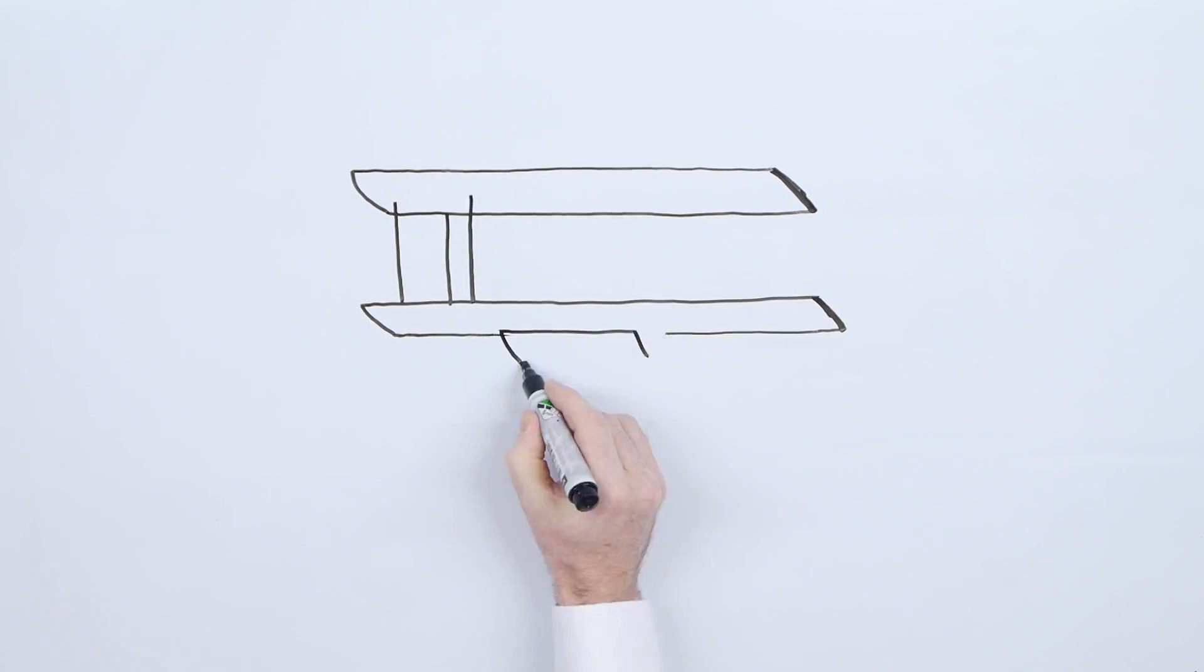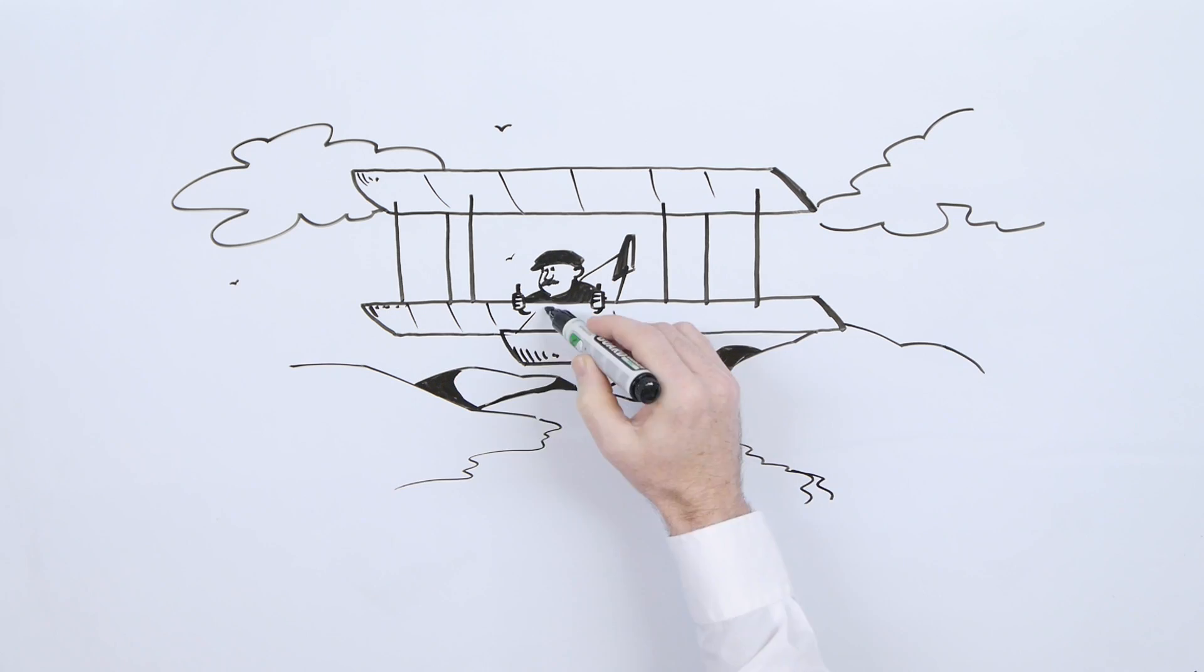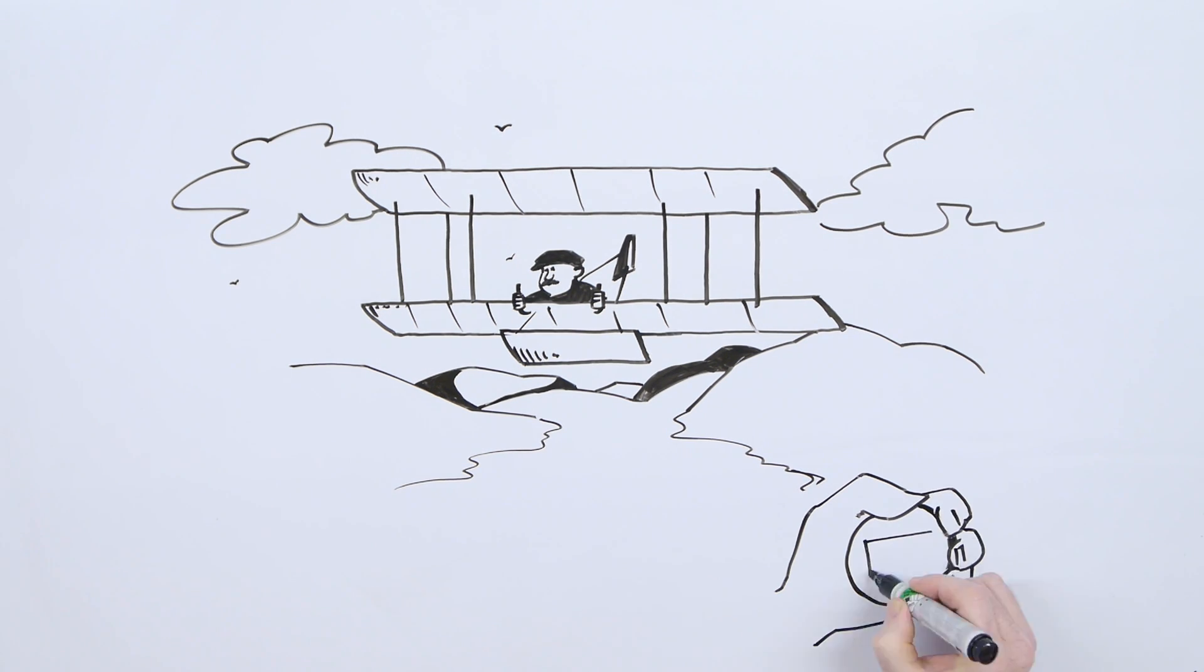A lot can happen in 60 seconds. The world of travel changed forever after the Wright brothers did the first controlled powered flight in human history. The flight lasted 59 seconds.